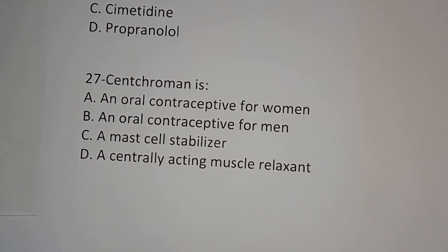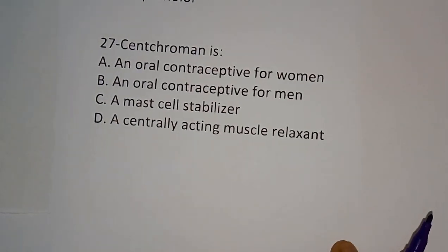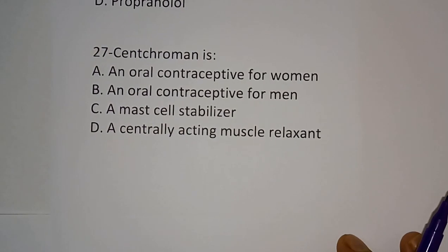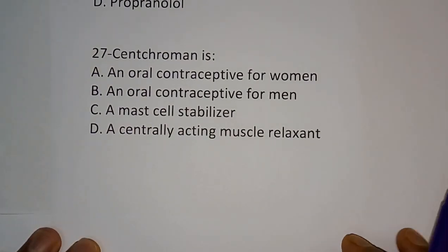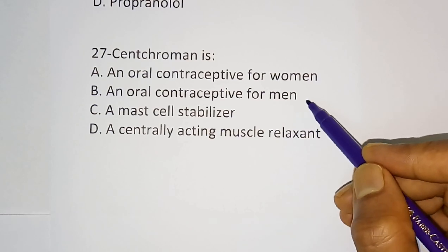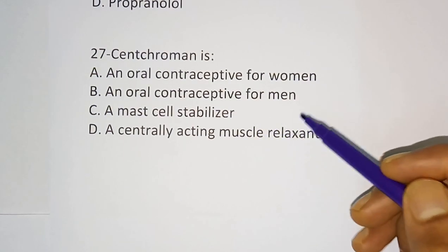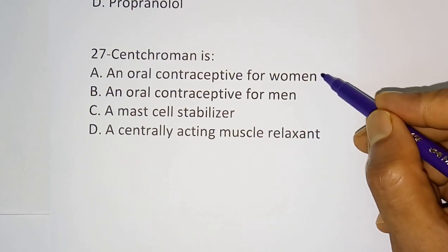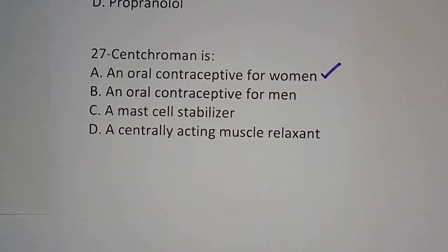Question number 27: Sennocromen is — options: an oral contraceptive for women, an oral contraceptive for men, a mast cell stabilizer, a centrally acting muscle relaxant. The correct answer is it is an oral contraceptive for women. Thank you for watching this video. If you like this video, please subscribe to the channel and share it with your friends. Thank you.